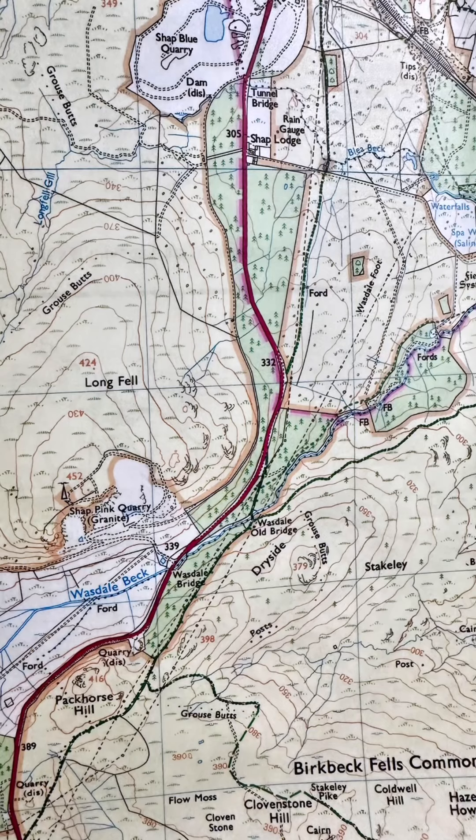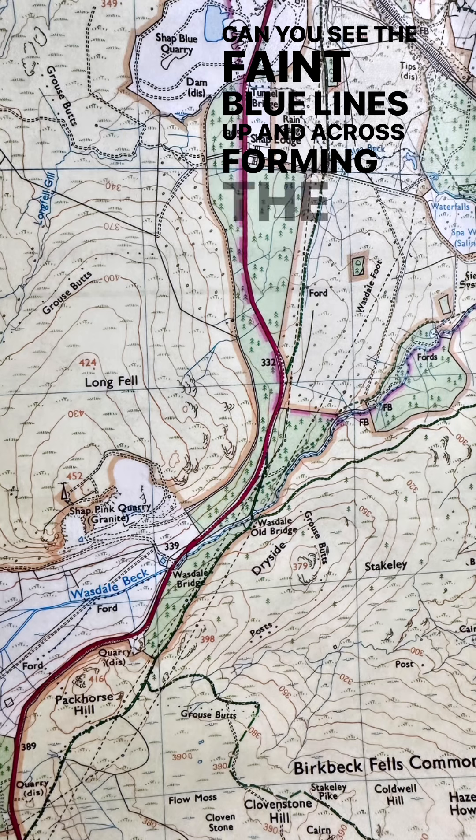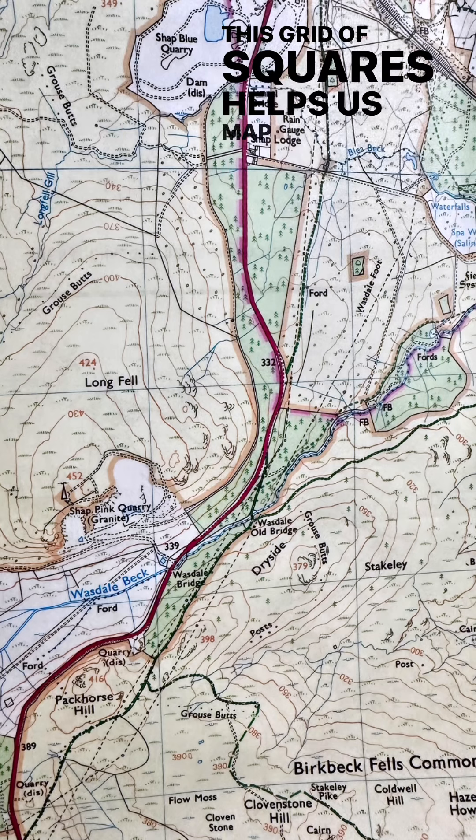In this short clip we're going to look at grid references, so let's take a look at the grid system. Take a look at this map. Can you see the faint blue lines up and across forming the grid? This grid of squares helps us map readers to locate a place.